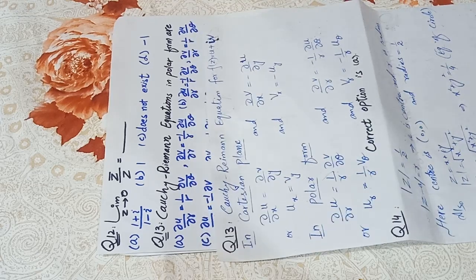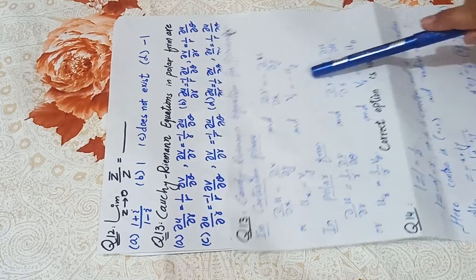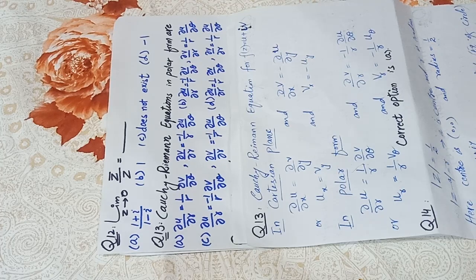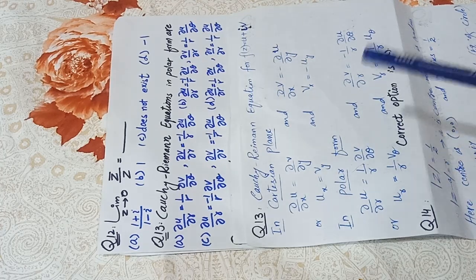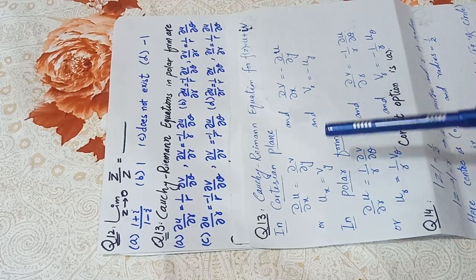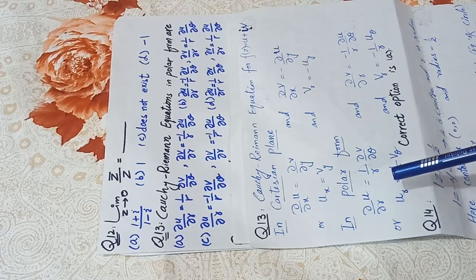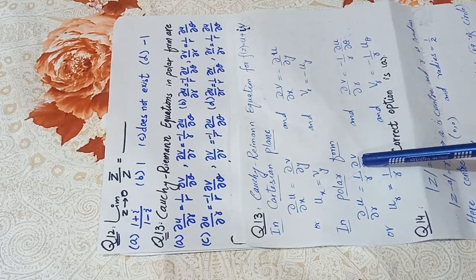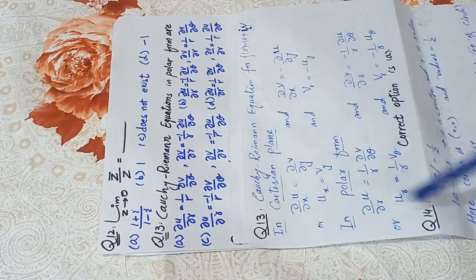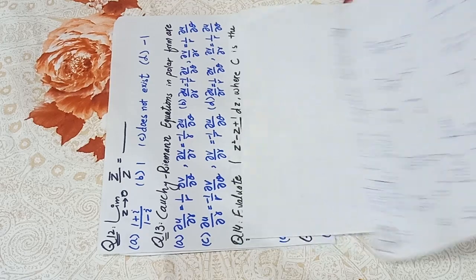The only changes between the options are the plus/minus signs. Comparing with our polar form CR equations, option A is the correct option.